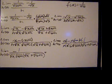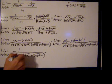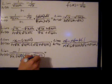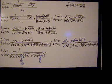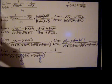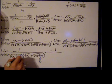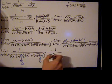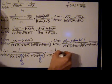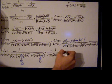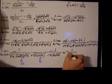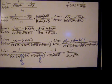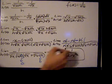Now we just need to take the limit. As h goes to 0, the h terms go to 0 as well. So I'm left with negative 1 over the square root of x times the square root of x, which is just x, times the square root of x plus the square root of x, which is 2 square roots of x. To clean that up, we get negative 1 over 2 times x to the 3/2, because the square root of x is x to the 1/2, and x times x to the 1/2 gives x to the 3/2.